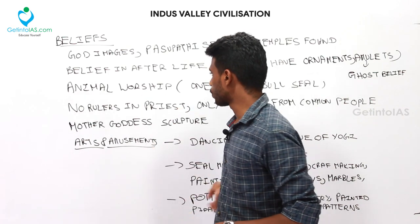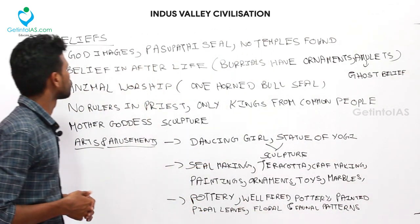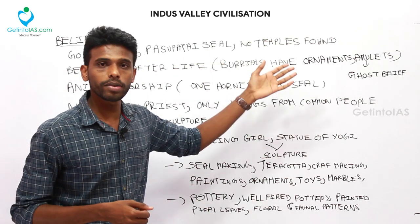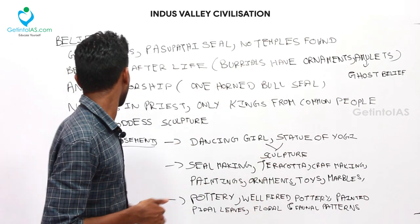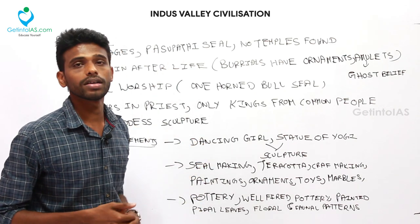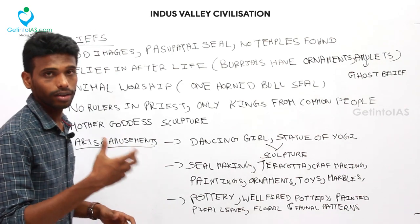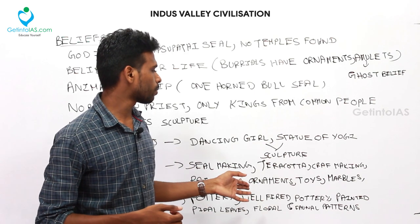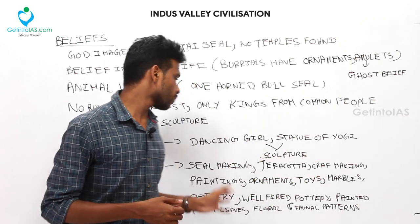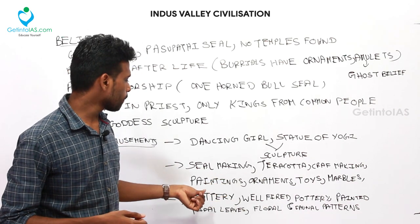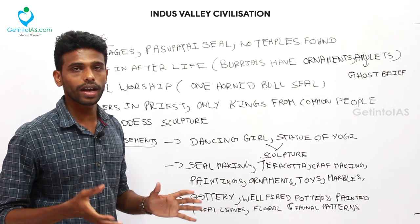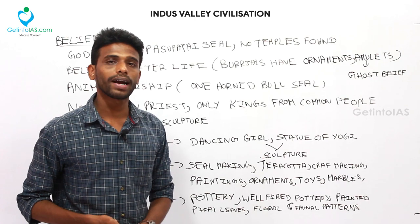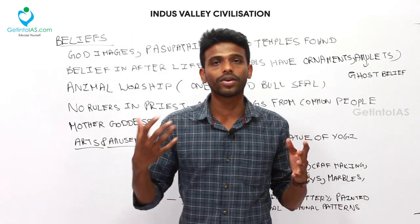This is the end of the Harappan Civilization or Indus Valley Civilization coverage. To revise the final section: people believed in gods, ghosts, and afterlife, used amulets, had burials with ornaments, no temples were found indicating no priest class, and kings came from common people. Mother Goddess culture and the Pashupati seal indicate worship of Lord Shiva. Arts included the Dancing Girl, statue of yogi, seal making, terracotta, paintings, toys like toy carts and marbles, and well-fired decorated pottery with floral and faunal patterns.